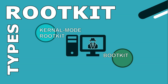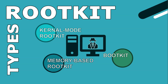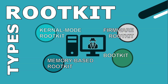Bootkits infect the system's boot process, allowing the rootkit to launch even before the operating system loads. Memory-based rootkits reside in a system's memory and manipulate running processes to maintain control. Firmware rootkits infect firmware such as the BIOS, which is responsible for initializing hardware components during system startup.